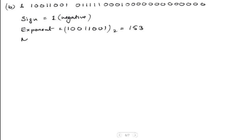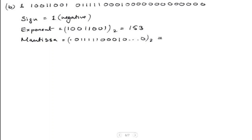Then we have to write down the mantissa. We'll write it with the decimal point in front so the position values are clear. We have five ones, then three zeros, then a one, followed by zeros. If you convert this, you get the value 0.4853515625.